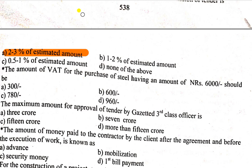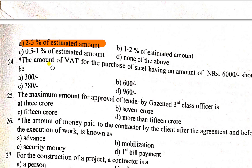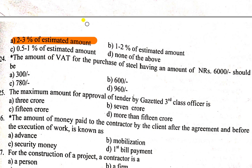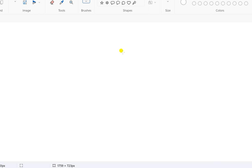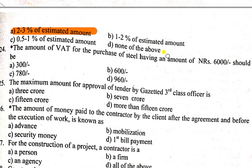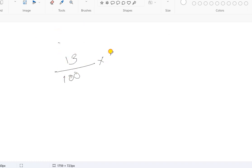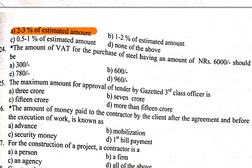Question number 24: The amount of VAT for the purchase of steel having an amount of 6,000 — the percentage of VAT is 13%. So 13 × 6,000 / 100 = 780. The correct answer is 780, so option C is correct.